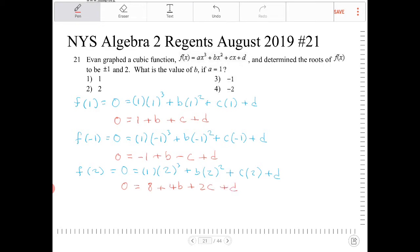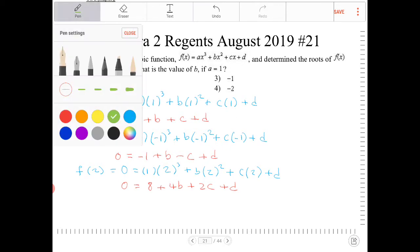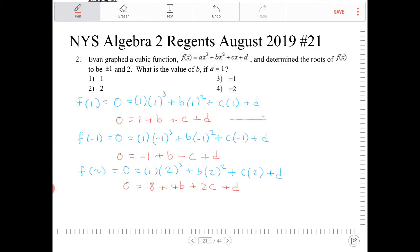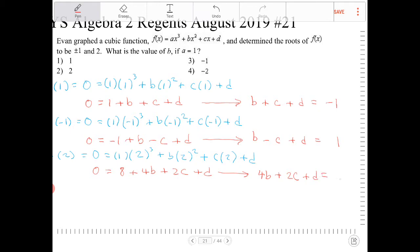So, I have actually three equations and three unknowns. What I'm going to do now is re-express this. What I end up with is b plus c plus d equals negative 1. Over here, I have b minus c plus d equals positive 1. And the last equation is 4b plus 2c plus d equals negative 8.